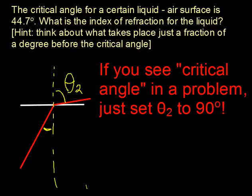So now that you know what a critical angle is, I'm going to make it as simple as I can. If you see the word critical angle in a problem, just set theta 2 equal to 90 degrees and see what theta 1 is. I'm going to do that for you.